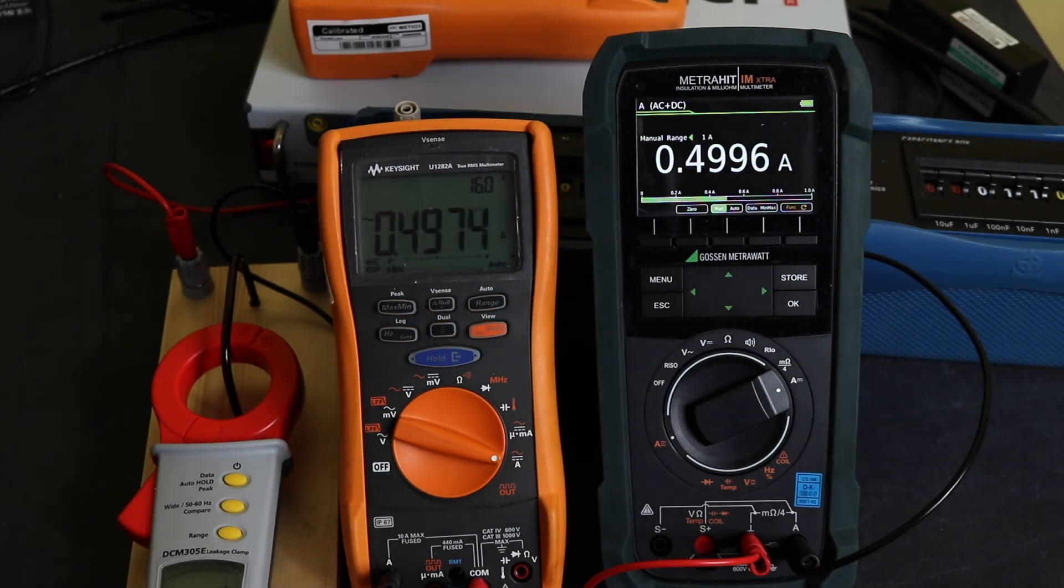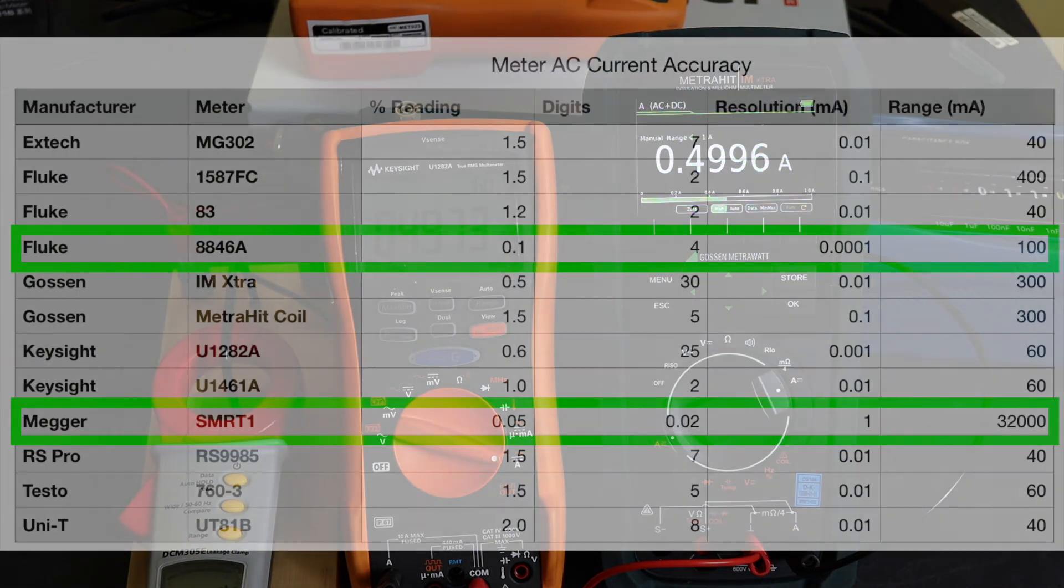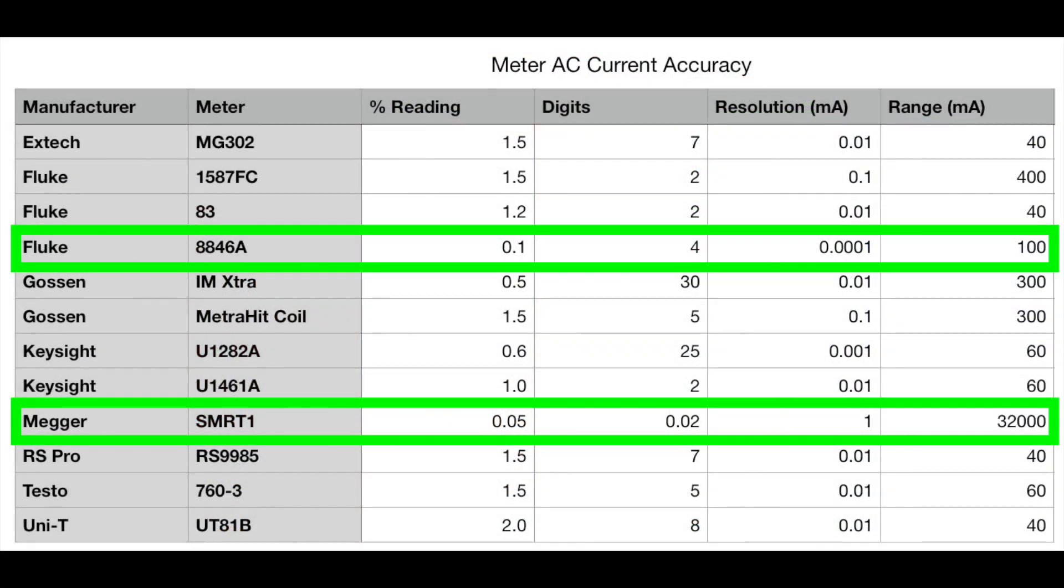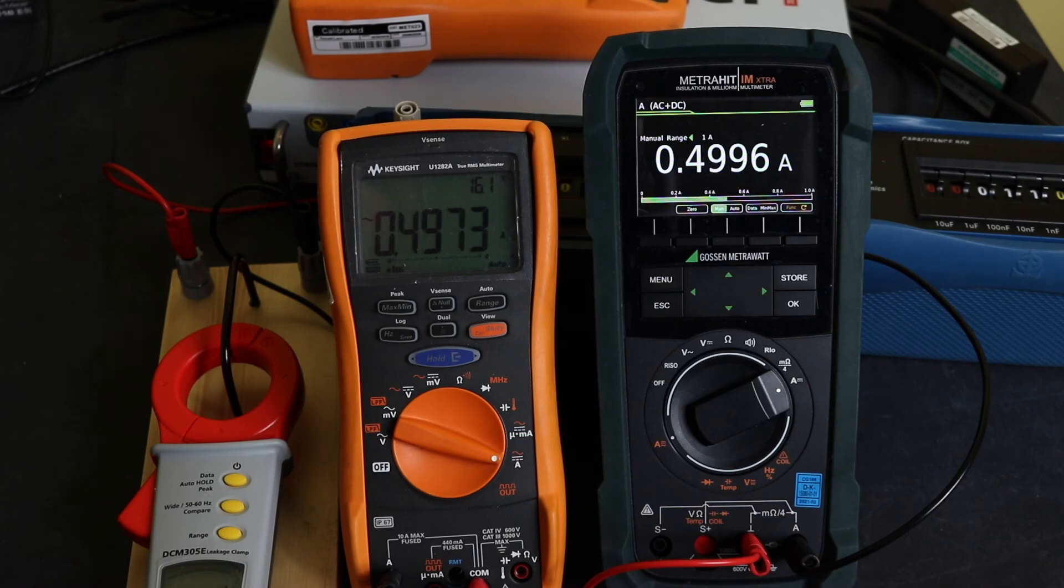So I can try the value from the MetroClip back in and just see if that brings the reading back into tolerance. But it takes it more out of tolerance from the MetroClip because I was reading low. But you can see from the previous table that I showed of the accuracy, the SMRT1 there should have the accuracy to do the test and is way more accurate than any of the other instruments I've got, other than the 8846A that I've managed to break, so I can't use. Yeah, interesting stuff.